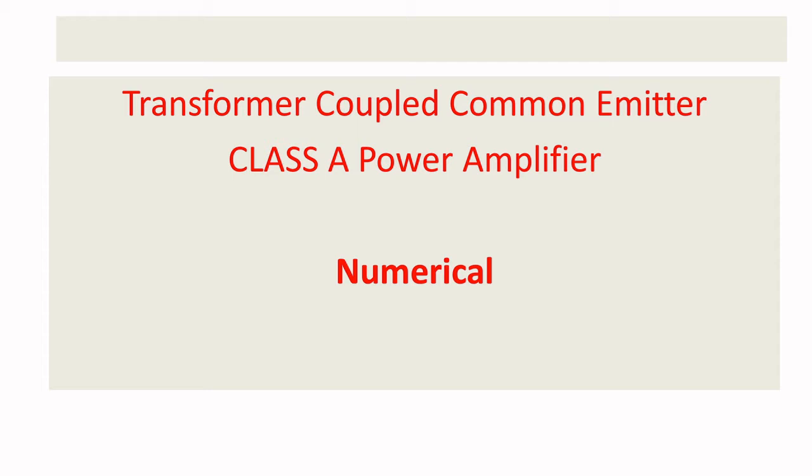That is, in the collector part, the resistance can be modified either with inductance or by placing some transformer. In the previous lecture, we discussed inductance coupled amplifier. Today, we will see transformer coupled common emitter class A power amplifier.